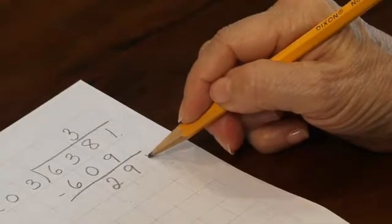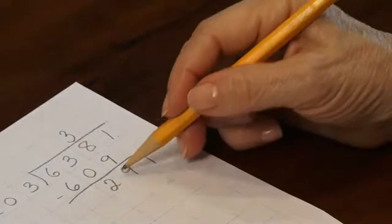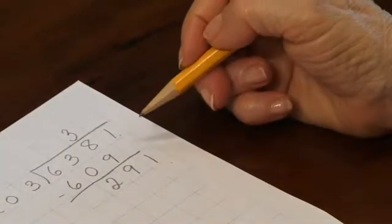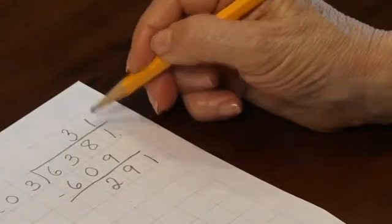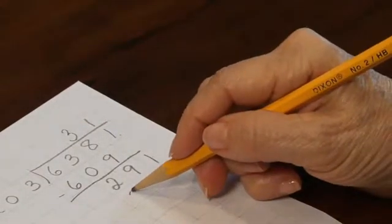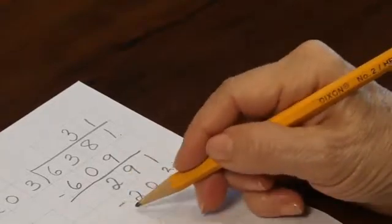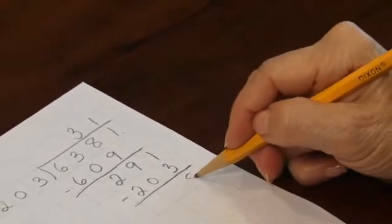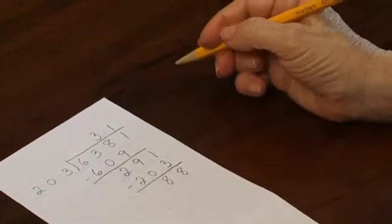Now I'll bring down the units place and ask myself, how many groups of 203 are there in 291? Well that's easy. There's only one group of 203 in 291. 203 taken once equals 203. And the remainder is 88.